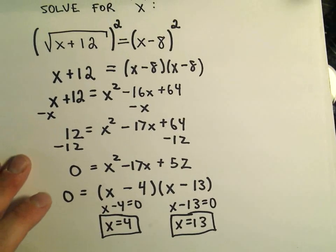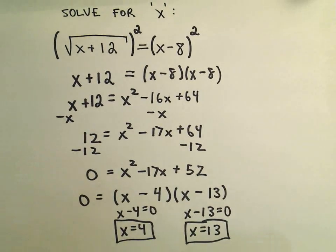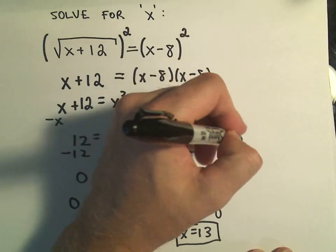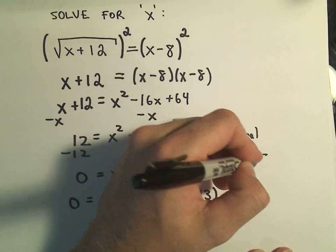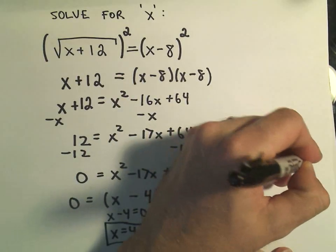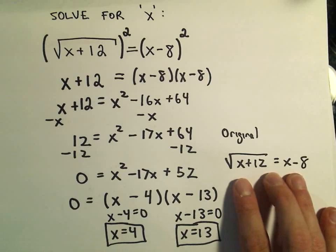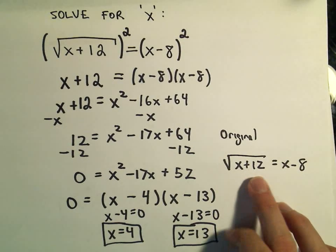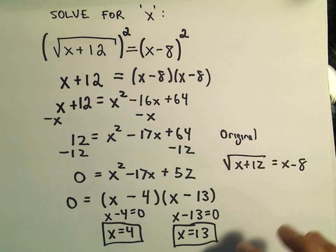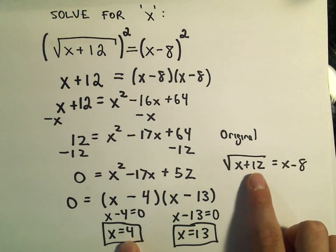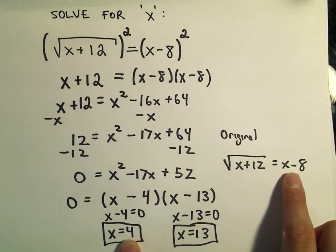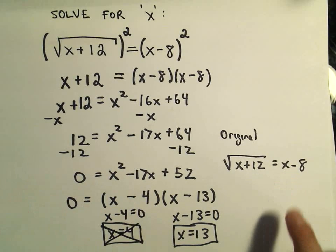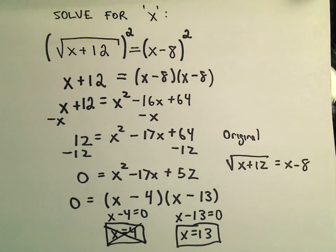Typically, anytime you have a problem involving square roots, you always want to go back to the original problem and see if these solutions actually work. So remember, this was the original problem: x plus 12 equals x minus 8. Let's see, notice if we plug 4 in, we would get 16. The square root of 16 is 4. But if we plug that onto the right side, we'll get negative 4. So actually, this solution does not work in the original equation. It gives us what's called an extraneous solution.